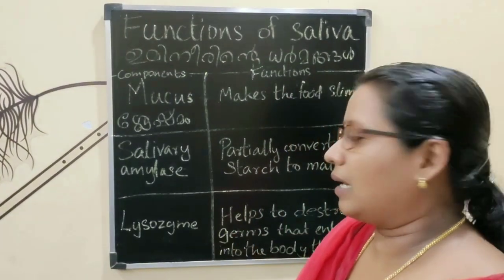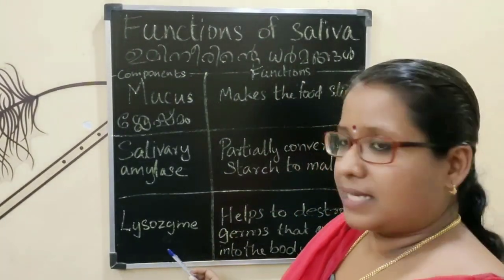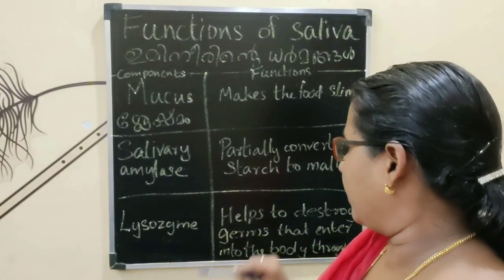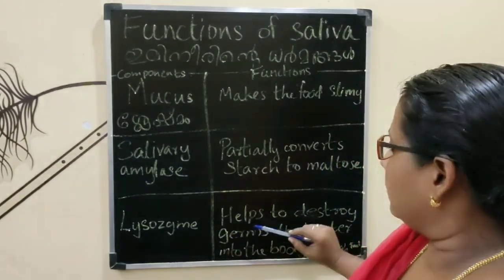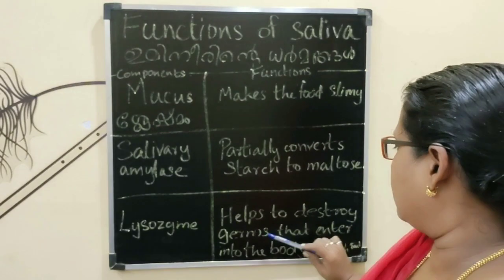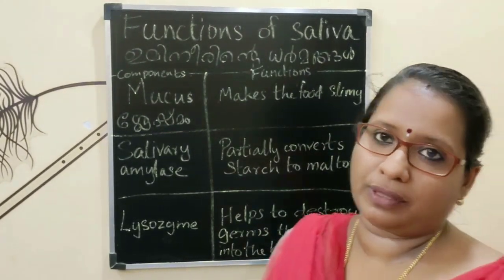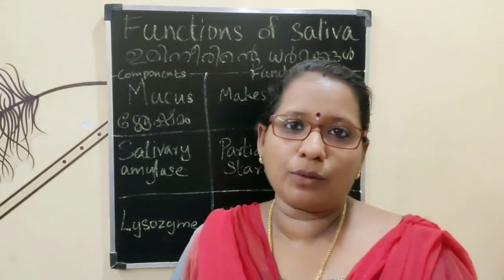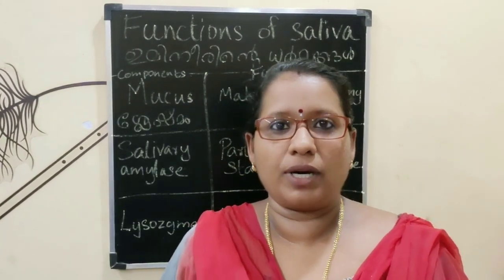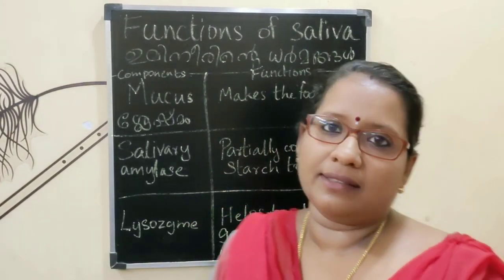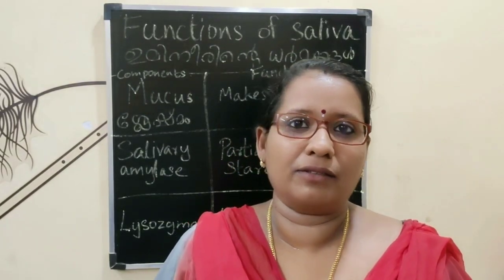Next is lysozyme. This is an enzyme. Lysozyme helps to destroy germs that enter into the body through the food. It also helps to destroy bacteria in the body.